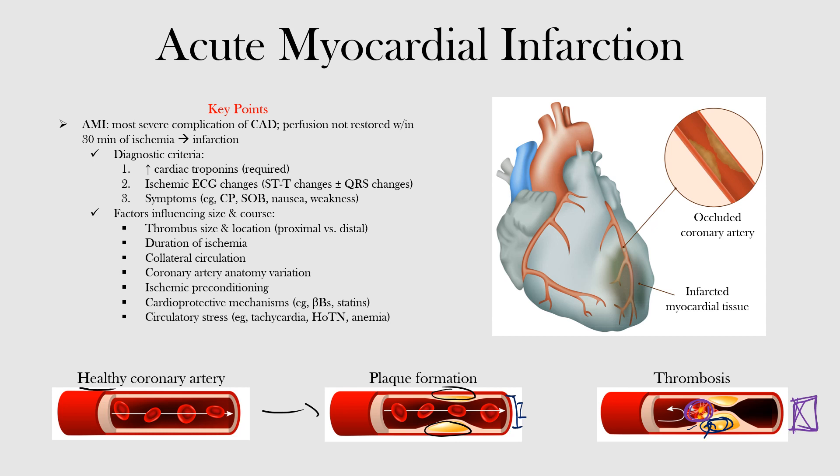Coronary artery anatomy varies among individuals. In general, the more myocardial tissue supplied by an artery, the greater the ischemic region at risk in the setting of an occlusion. There is also something called ischemic preconditioning that may play a protective role; this is an area of ongoing research and will not be covered in detail here.